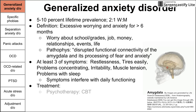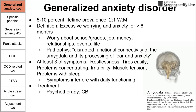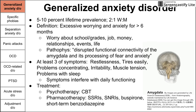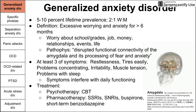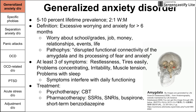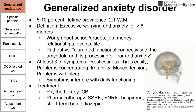Treatment for GAD can be psychotherapy like cognitive behavioral therapy (CBT), as well as pharmacotherapy: SSRIs, SNRIs, buspirone, and short-term benzodiazepines. You never want to prescribe benzos for life, but for a short-term fix they might be appropriate. You'll see that many of these treatments are the same for all of these diseases — the same psychotherapy and the same pharmacotherapy.